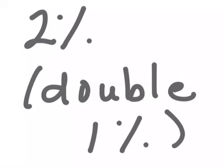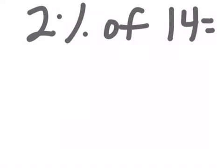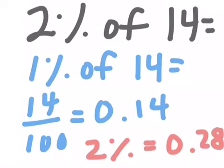If I were to look for 2% of a number, I simply have to double my 1%. So if I were looking for 2% of 14, I know that 1% of 14 would be 14 hundredths, 0.14, and 2% would simply be double that. So 2% of 14 is 28 hundredths.